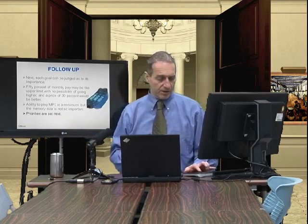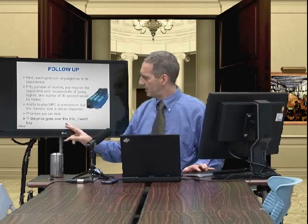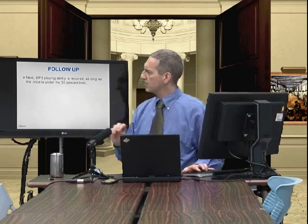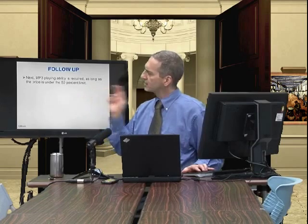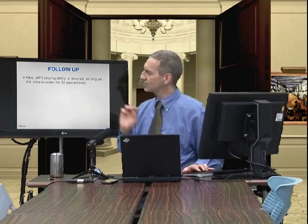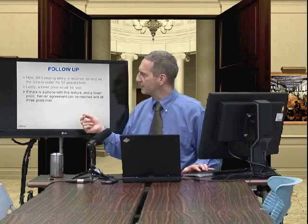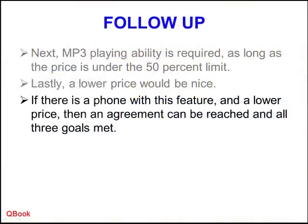Next, we're going to set these priorities. If the MP3 playing ability is required, it must be under the 50% price limit. A lower price would be nice. If he can find a phone with this feature at the lower price, he would meet his goals. If he finds a phone under 50% of his pay, he meets his goal. If he finds a phone under 30%, his success can be rated as even higher.